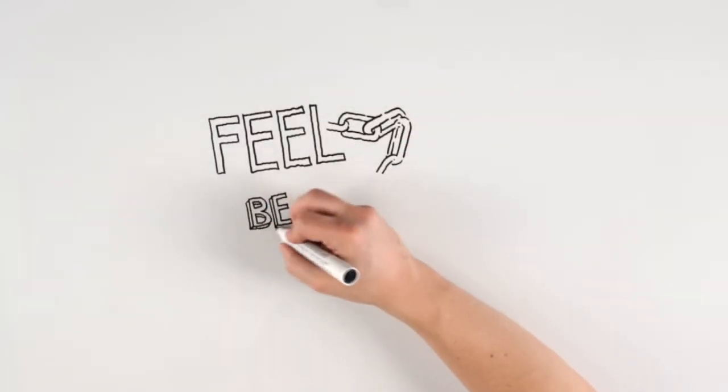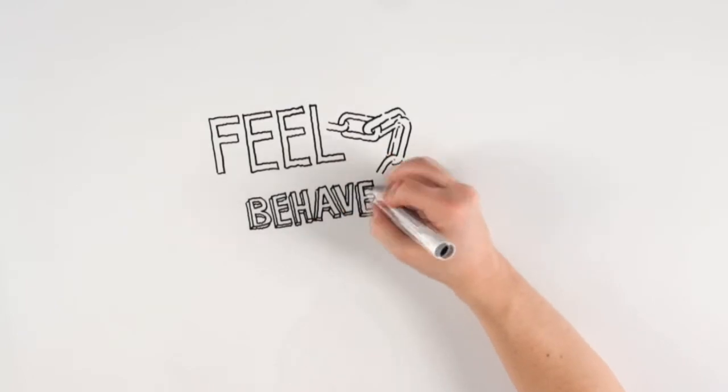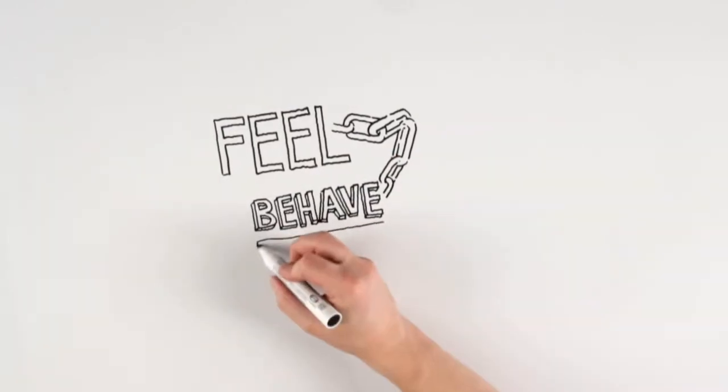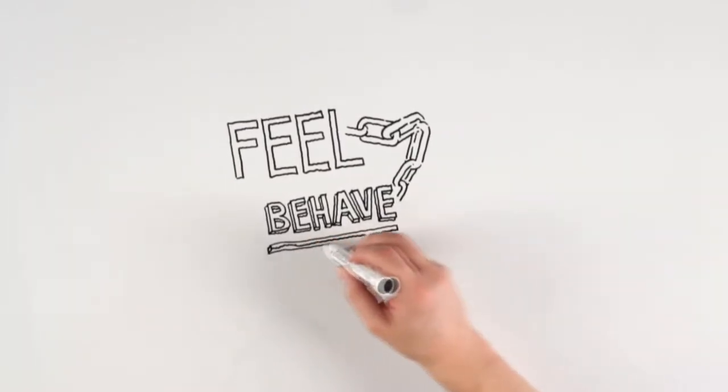They're learning how to manage the link between how they feel and how they behave. This is a critical skill in life and can give the individual the capability to hold down a job and to keep friends.